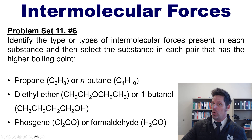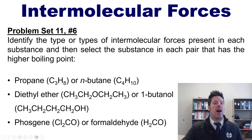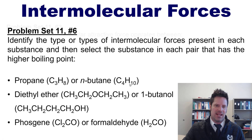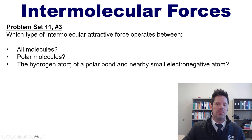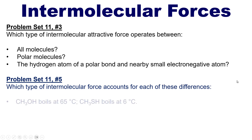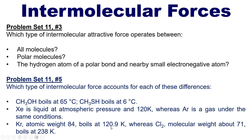Now I want you to identify the type or types of IM forces present in each of these substances, and then select which substance in each pair has the higher boiling point. I'll post a link in the description below to a separate video where I explain these. There are also questions about which IM force operates between all molecules, which operates between polar molecules, and which involves a hydrogen atom of a polar bond near a small electronegative atom. Lastly, questions address differences such as methanol boiling much higher than methyl thiol, xenon being a liquid at 120K while argon is a gas, and krypton boiling at 120.9K while chlorine — with a much lower molecular weight — boils at a much higher temperature.